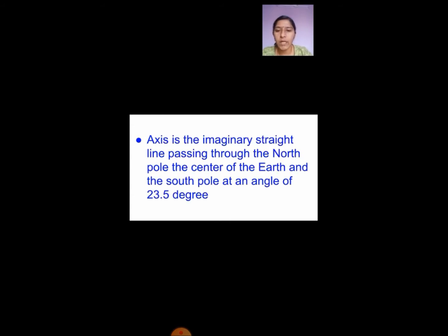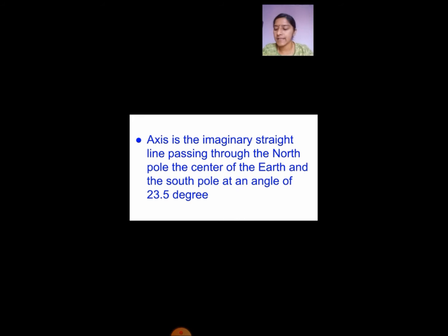Axis is the imaginary straight line passing through the north pole, the center of the earth and the south pole, at an angle of 23.5 degrees. You would have seen the globe — it is tilted. So the north pole is on top, the south pole is at the bottom, and the axis passes through the center of the earth.